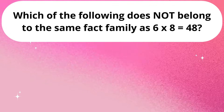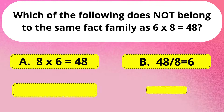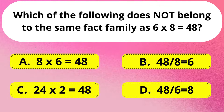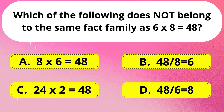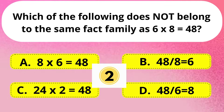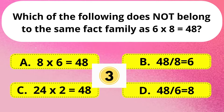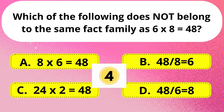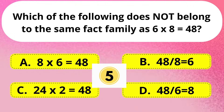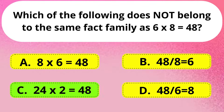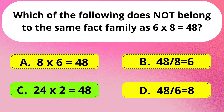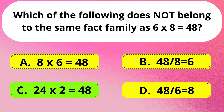Next question. Which of the following does not belong to the same fact family? The right answer is Option C: 24 multiplied by 2 is equal to 48.